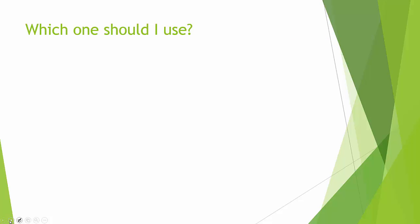Next we want to look at which measure of center we should use. We have four: mean, median, mode, and midrange. Some are better than others for different scenarios. Of all four, the mean and the median are most commonly used — that's why those have symbols and shorthand notation. Of those two, the mean is actually the most common.